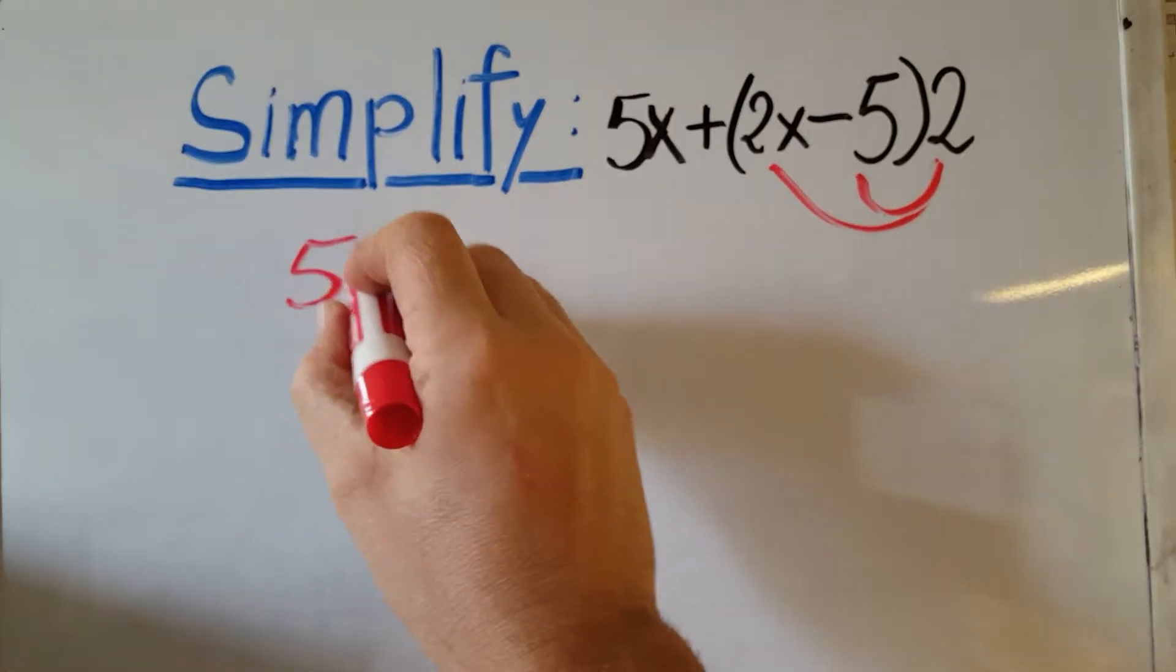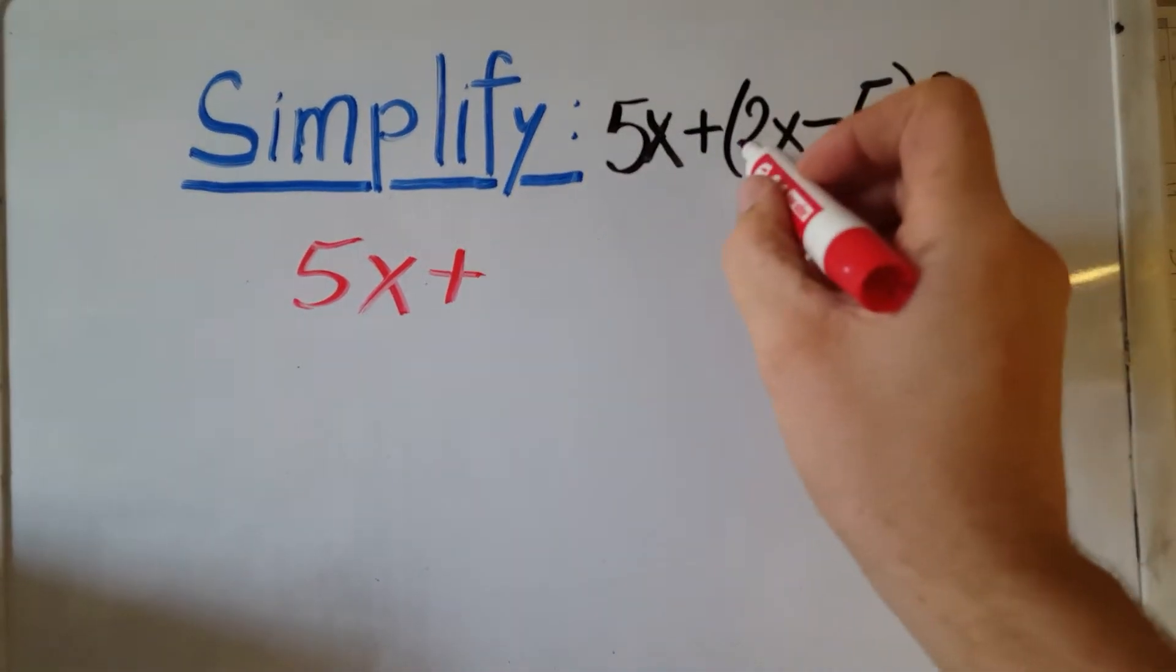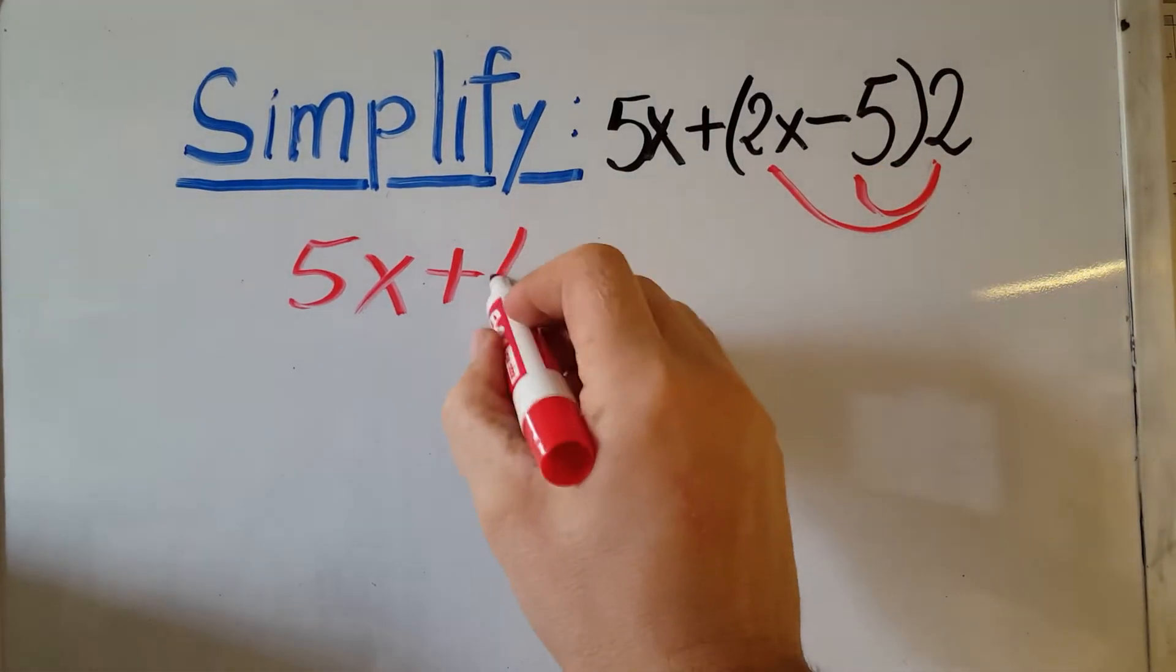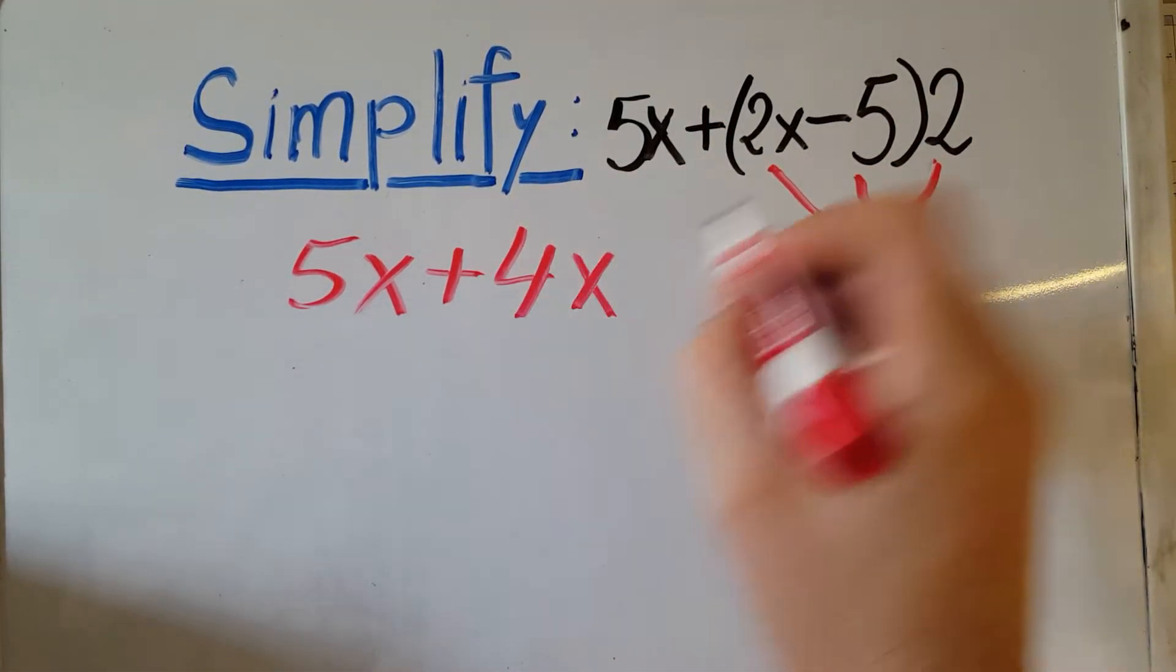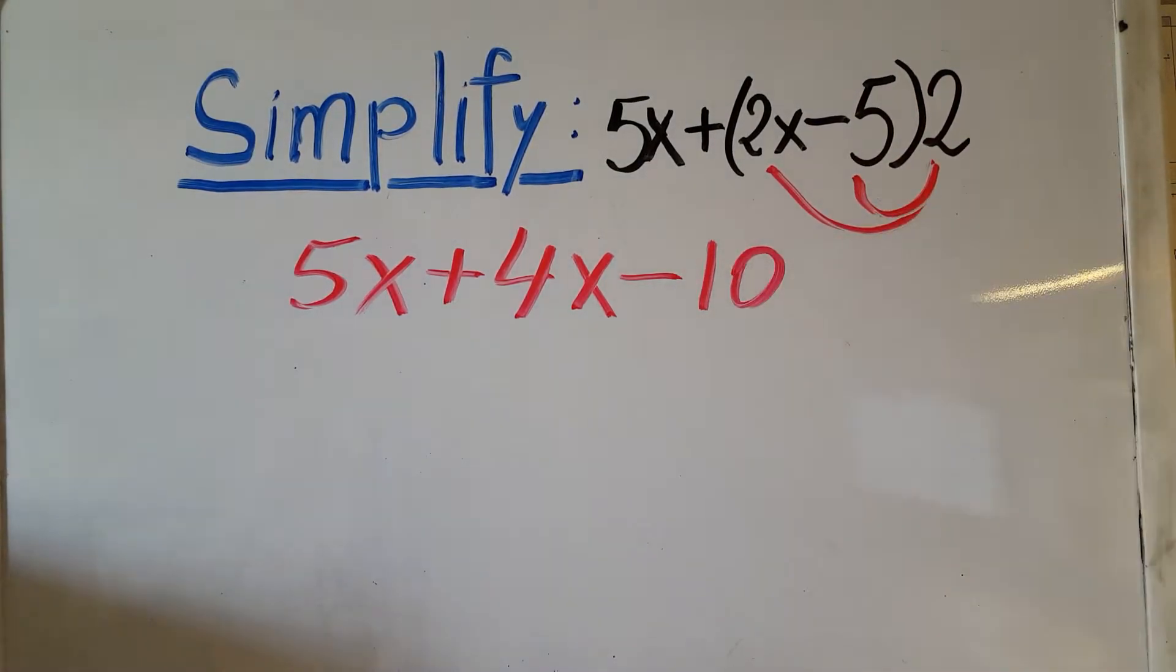We're going to write down the 5x, we're not doing anything with that. Plus 2 times 2x is going to give us 4x. 2 times negative 5 is going to give us negative 10. We're done with this step.